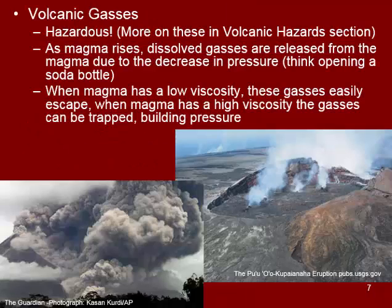Volcanic gases are another hazardous factor impacting volcanic eruptions — we'll discuss hazards more in a later section. Volcanic gases are dissolved in magma, and as the magma rises to shallower depths, pressure decreases and those dissolved gases are released as bubbles. Think of opening a soda bottle — you get that pressure change and bubbles form. With low-viscosity basaltic magma, gases escape easily. But with sticky, high-viscosity magma, gases get trapped, pressure builds, and this can cause a very explosive volcanic eruption.